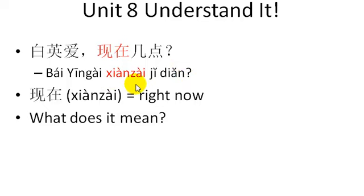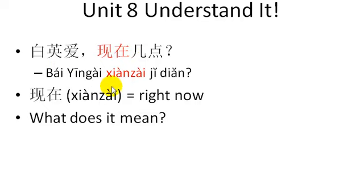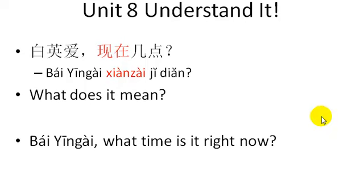现在 is typically how a Chinese speaker asks what time it is. In English we usually just say 'what time is it?' but Chinese have the habit of saying 'right now, what time is it?' — 现在几点? They don't always use that, but it's quite popular to say it this way. So the whole sentence means: 'Baiying Ai, what time is it right now?'